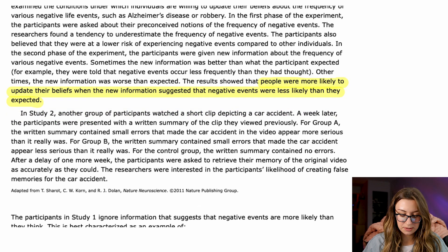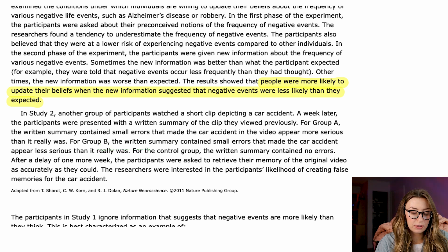And then in Study 2, another group of participants watched a short clip depicting a car accident. A week later, the participants were presented with a written summary of the clip they viewed previously. For Group A, the written summary contained small errors that made the car accident in the video appear more serious than it really was. For Group B, the written summary contained small errors that made the car accident appear less serious than it really was. For the control group, the written summary contained no errors. After a delay of one more week, the participants were asked to retrieve their memory of the original video as accurately as they could.